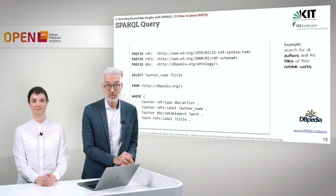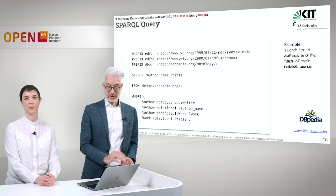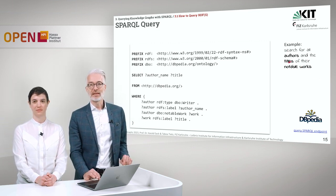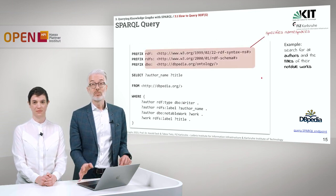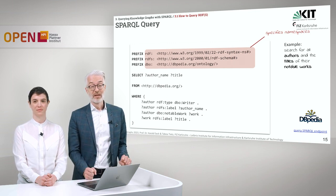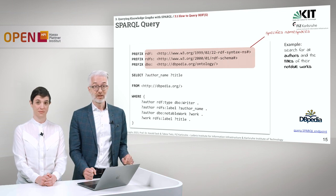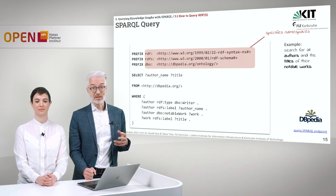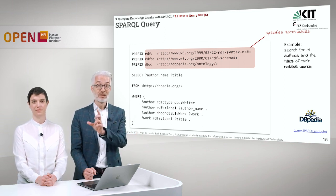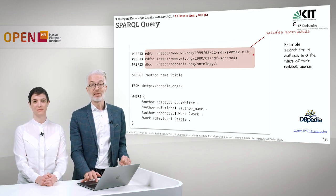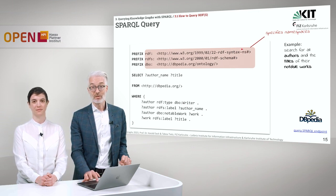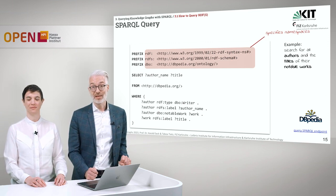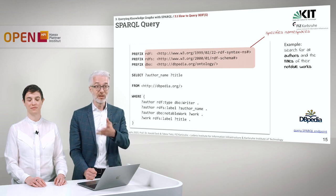Now let's do our first real SPARQL example: search for all authors and the titles of their notable works. First, we need a few namespace prefixes to make the query shorter. In SPARQL, prefixes work just like in RDF, except we use the keyword PREFIX instead of an ampersand, and we don't close them with a period — the URI is given in angle brackets. If you accidentally add a period, the SPARQL processor will point out the syntax error.